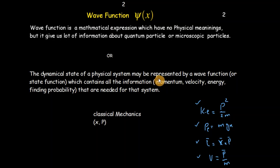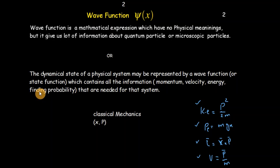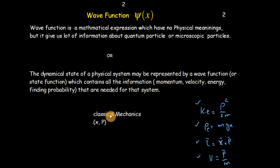The dynamical state of a physical system may be represented by a wave function or state function, which contains all the information like momentum, velocity, energy, and finding probability that is needed for that system. Now let us first understand this definition by looking at classical mechanics.